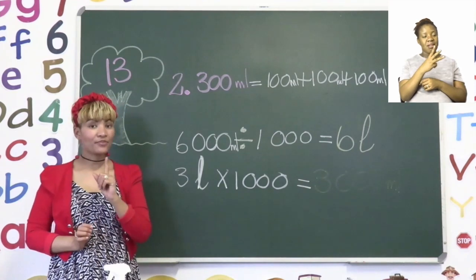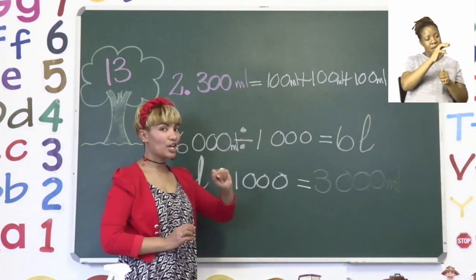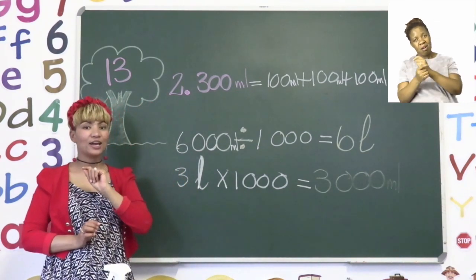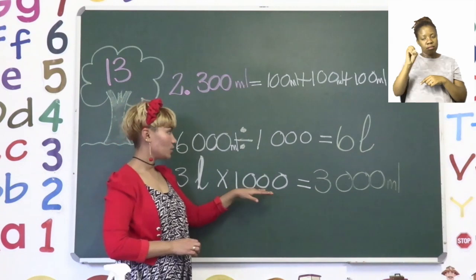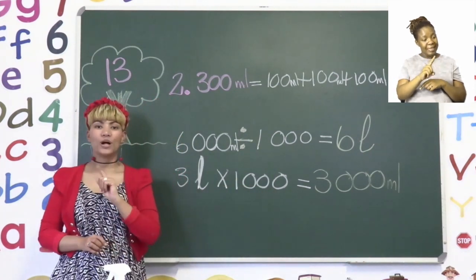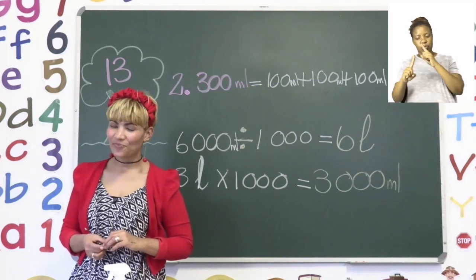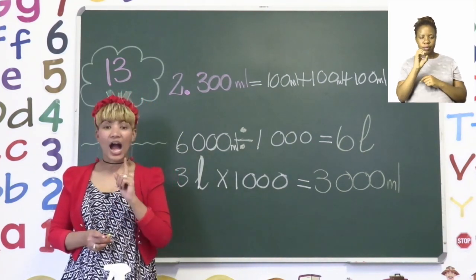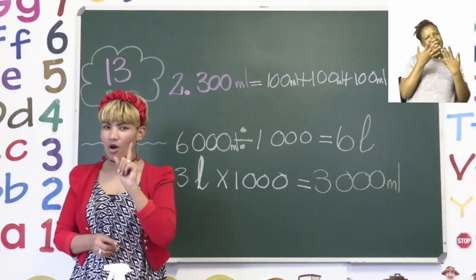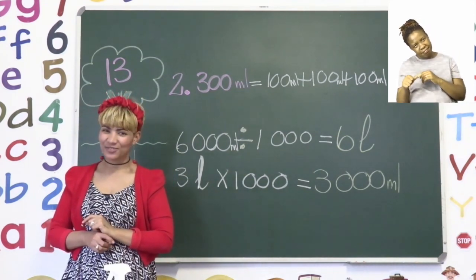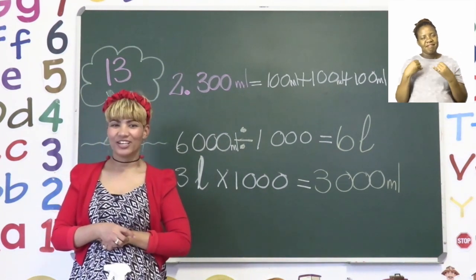Remember, everyone: if you want to convert milliliters to liters, you divide by 1000. But if you want to convert liters to milliliters, you multiply by 1000. I'm going to leave you to try and finish all these sums on your own. Have fun, everyone — we will see you shortly after the break.